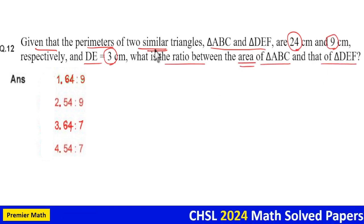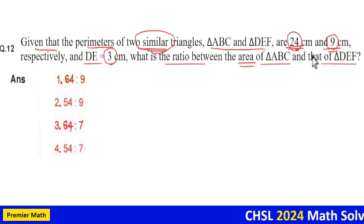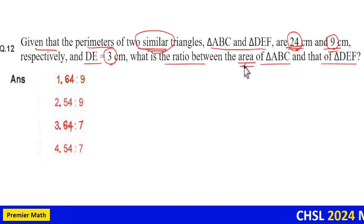Here we have two similar triangles and perimeters are given. Then we have a shortcut. That is, take the ratio of perimeters then square it. Then you will get the ratio of area.